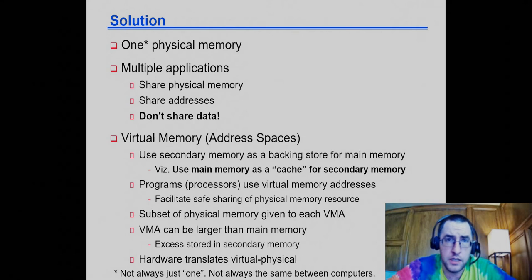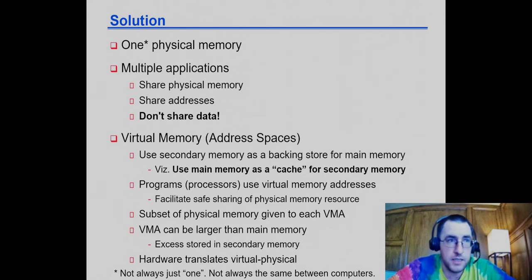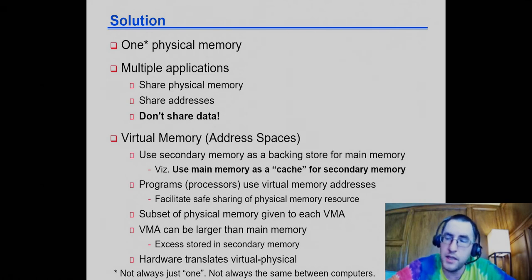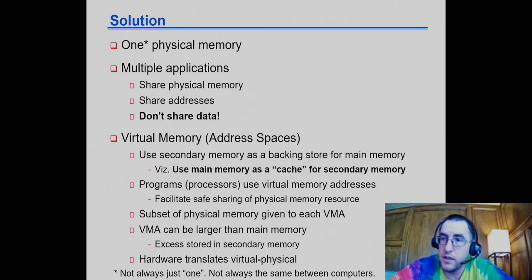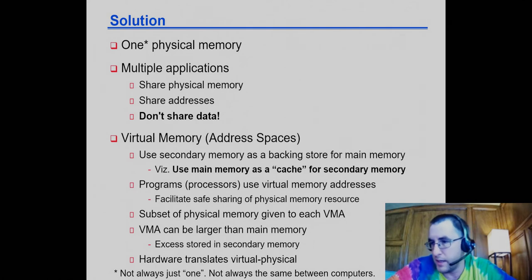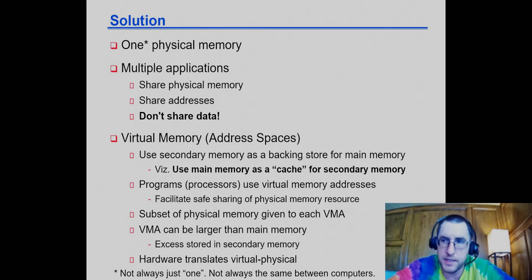The sharing of the physical resource is done by partitioning and allocating subsets of physical memory to the individual virtual memory address spaces. The virtual address spaces can be different sizes than physical memory — they can be smaller or larger. When a virtual address space uses more memory than is available in physical memory, the excess portions are on secondary storage, just like when a cache can't hold the working set, the excess goes into physical memory.